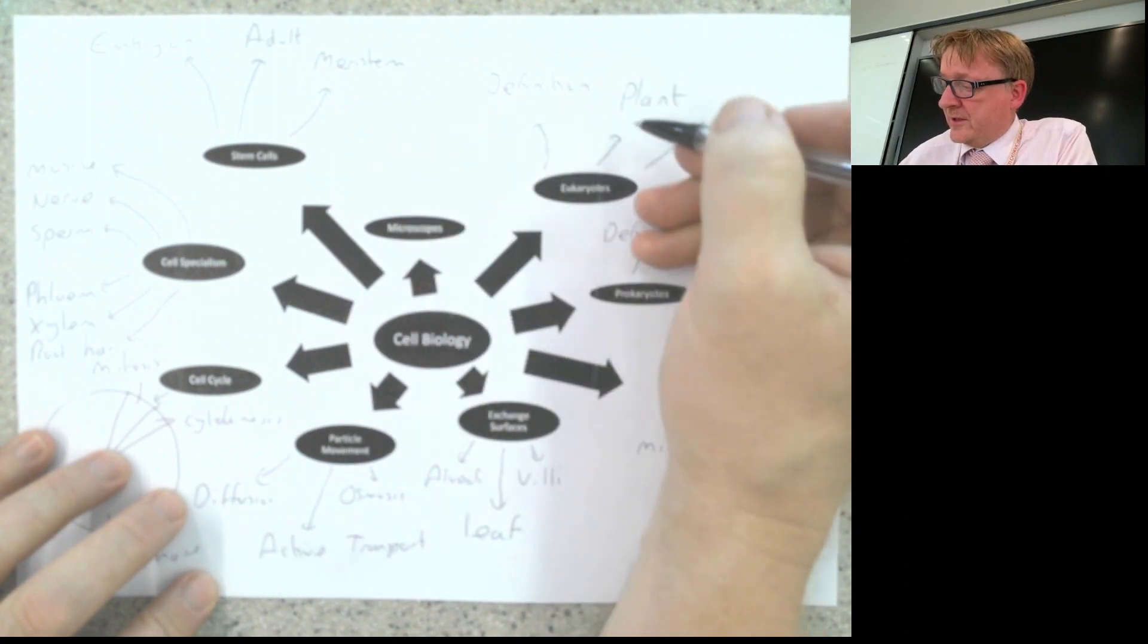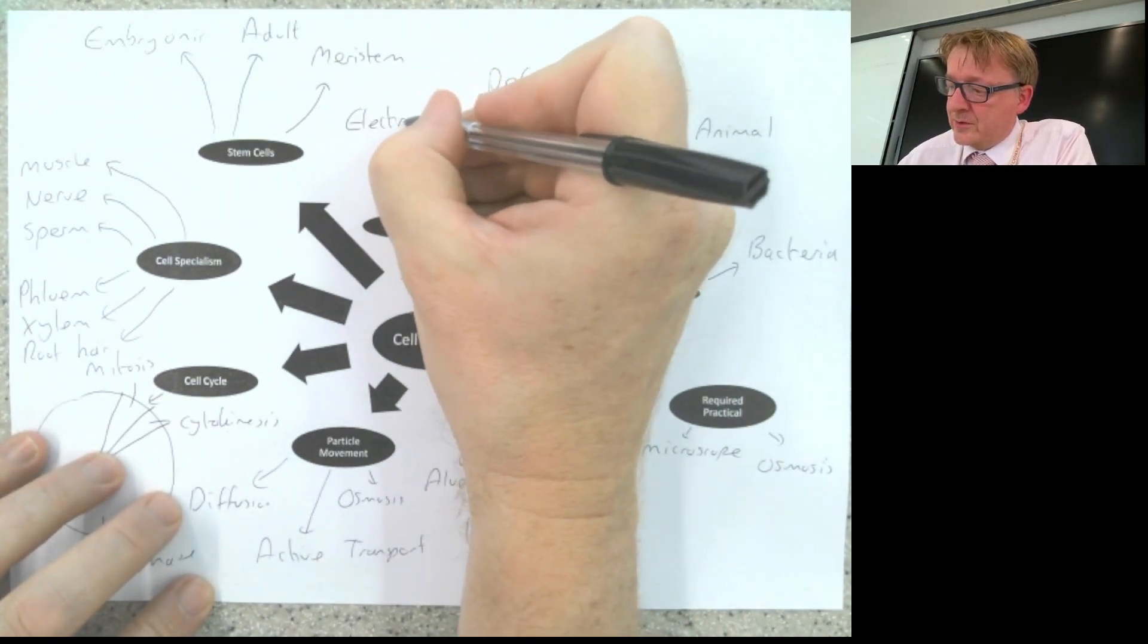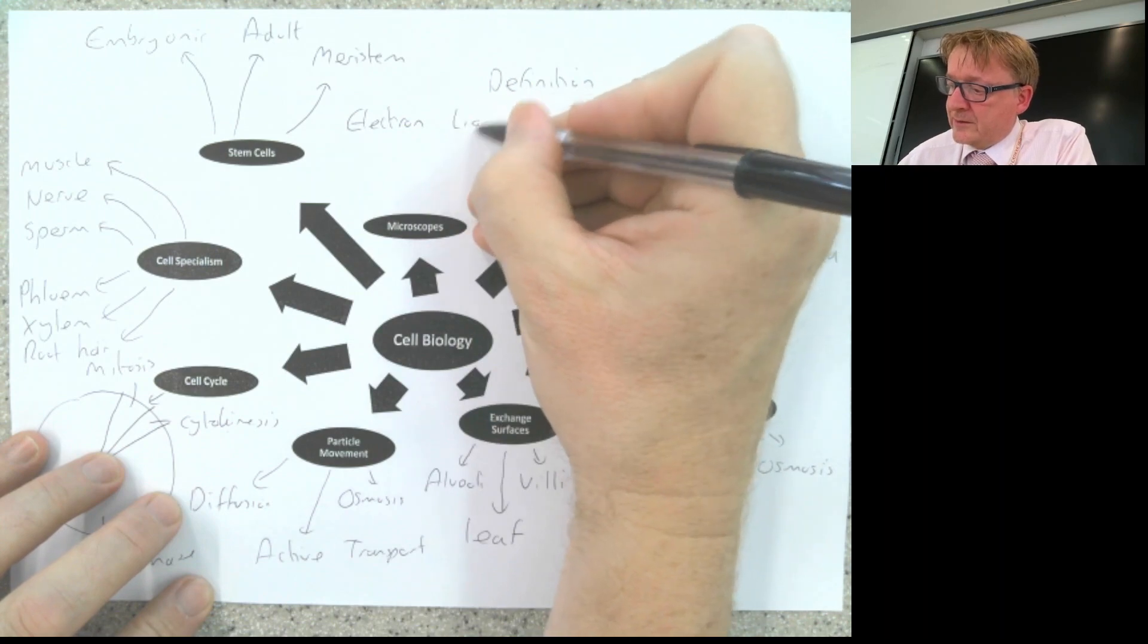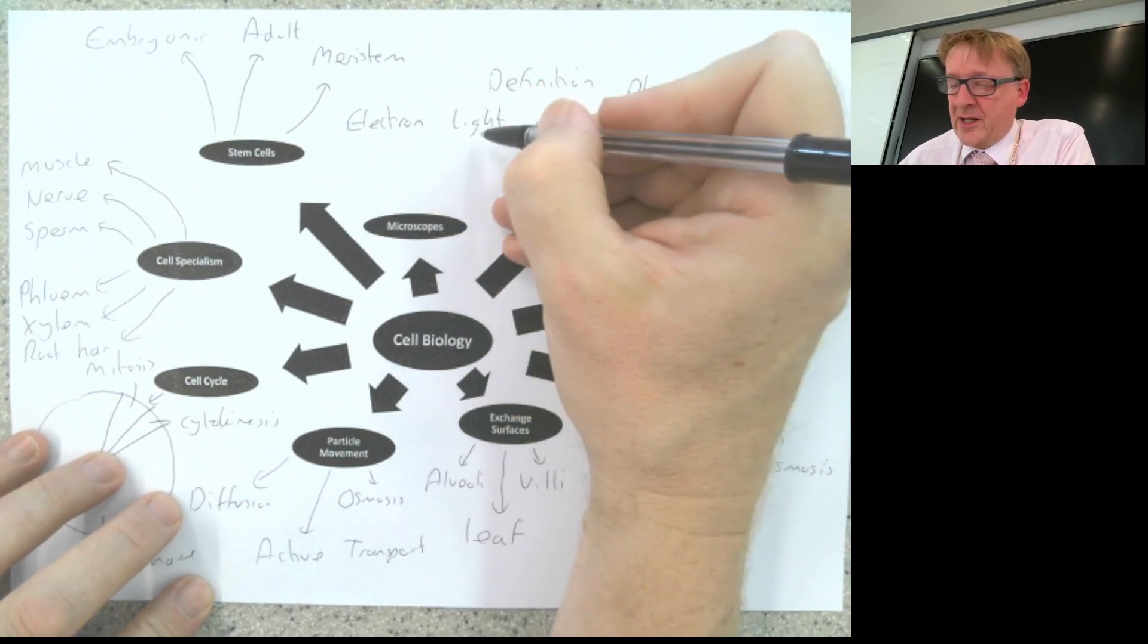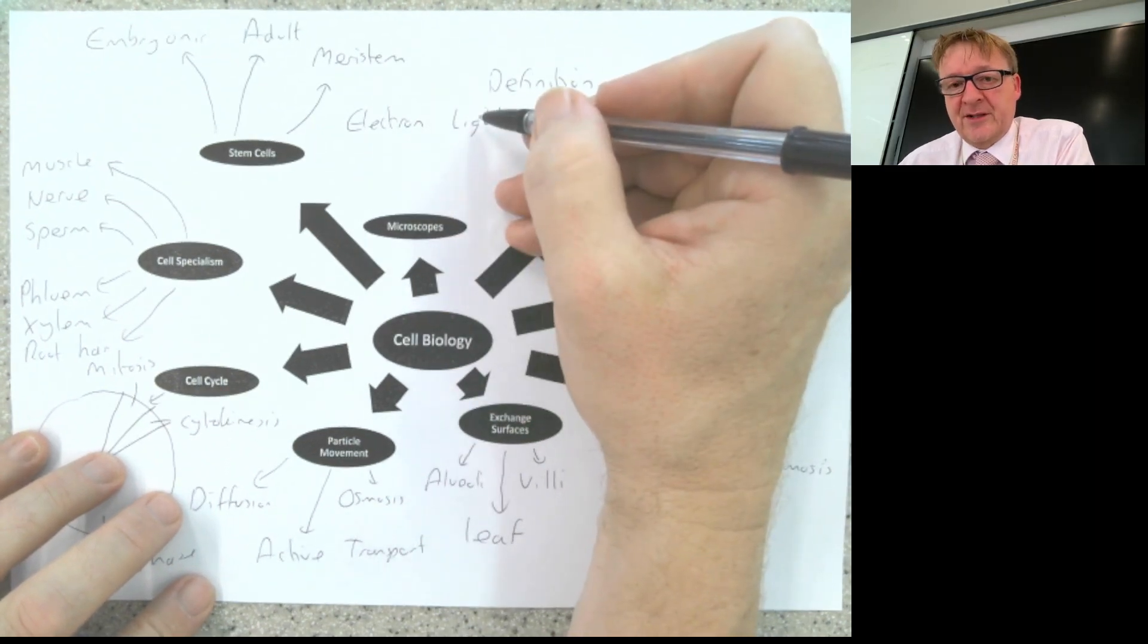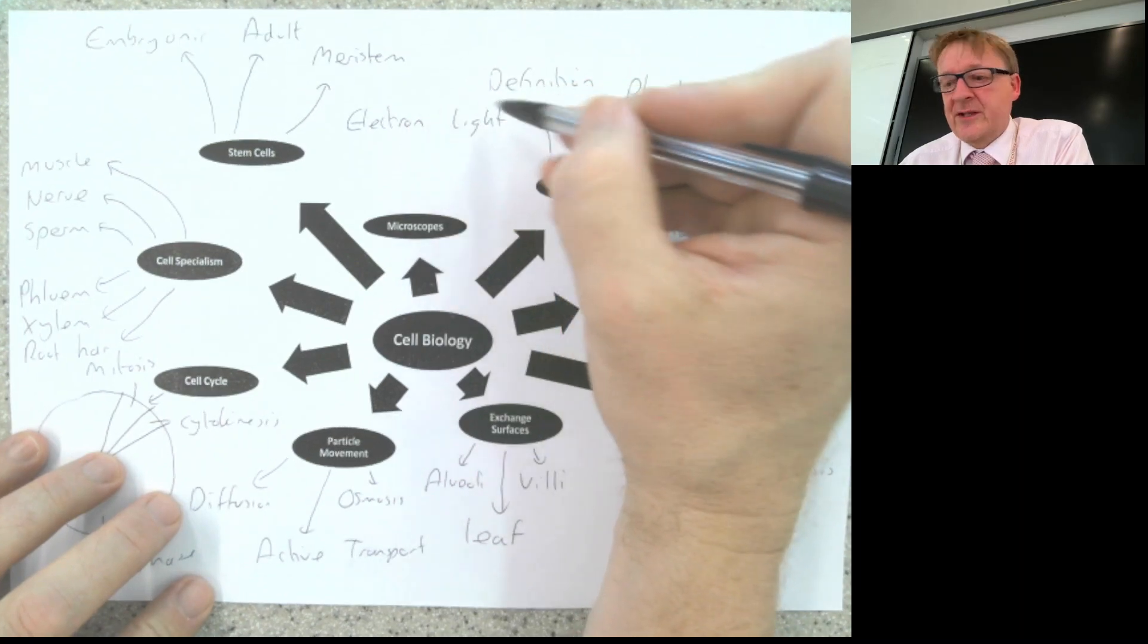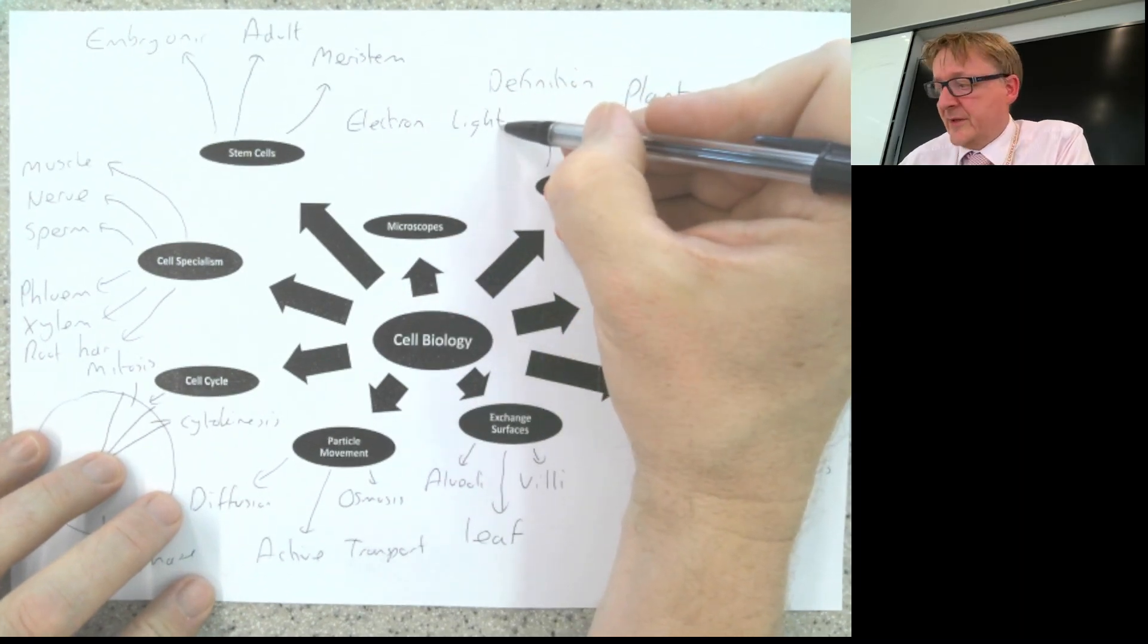The final box is microscopes. There are two main types: electron microscope and light microscope. You need to know the differences and the advantages and disadvantages of each. For example, electron is very expensive, which is a disadvantage. Light is much cheaper, which is an advantage.